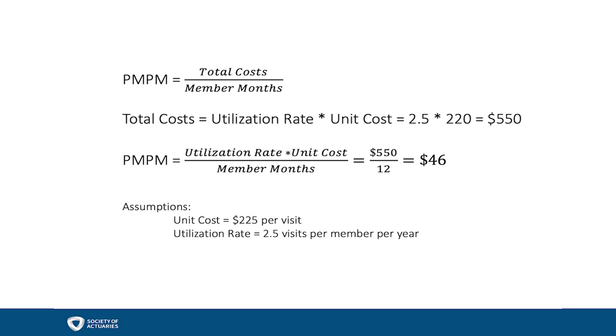Now we'll shift our focus to projecting PMPMs, which allows for some additional creative license. We're going to rearrange the calculation and project two pieces independently: a utilization rate and a unit cost. In our example, we've assumed that the utilization rate is equal to 2.5 office visits per year and that an average office visit costs $220. If we multiply these and then divide by 12 months, we get a PMPM of $46.